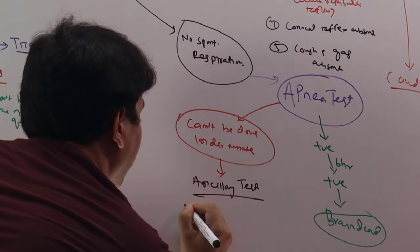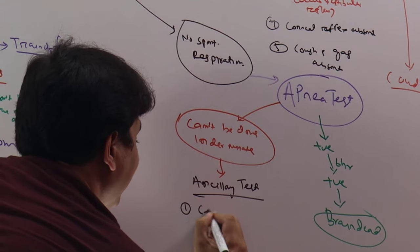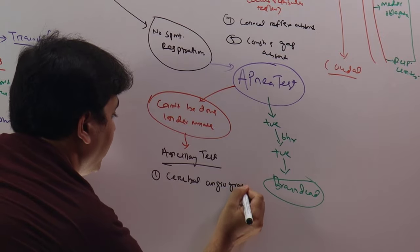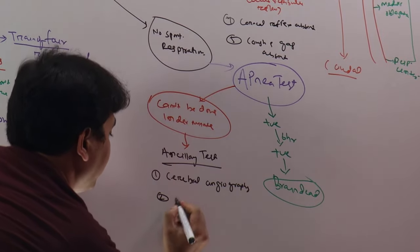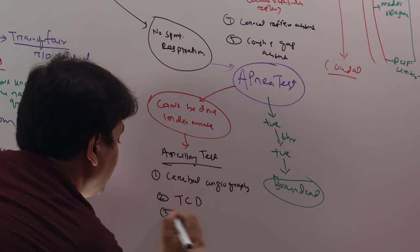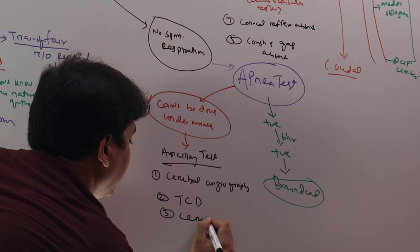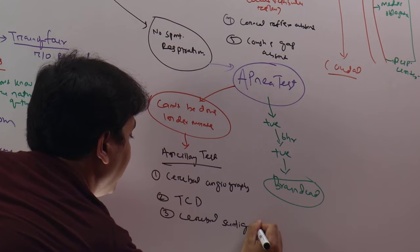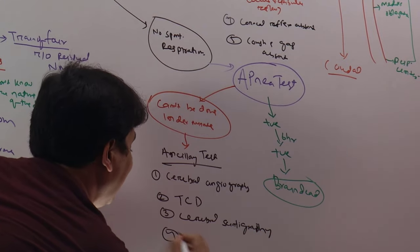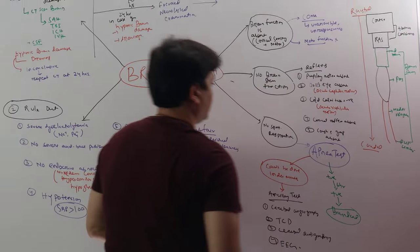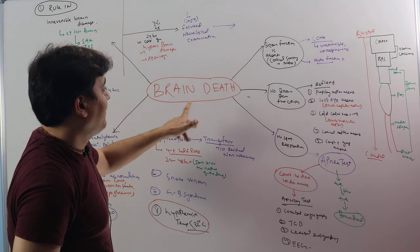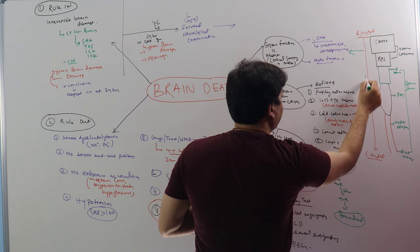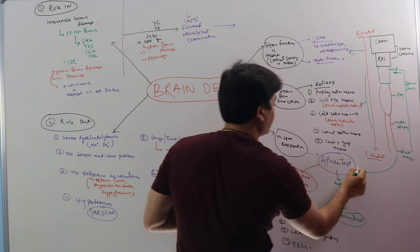We have basically four ancillary tests. Number one is cerebral angiography. Number two will be transcranial Doppler. Three will be cerebral scintigraphy. And number four will be electroencephalogram. In this way, we have to approach. You can see the cortical and reticular activating system function, then sequentially the brainstem function, then finally the respiration.